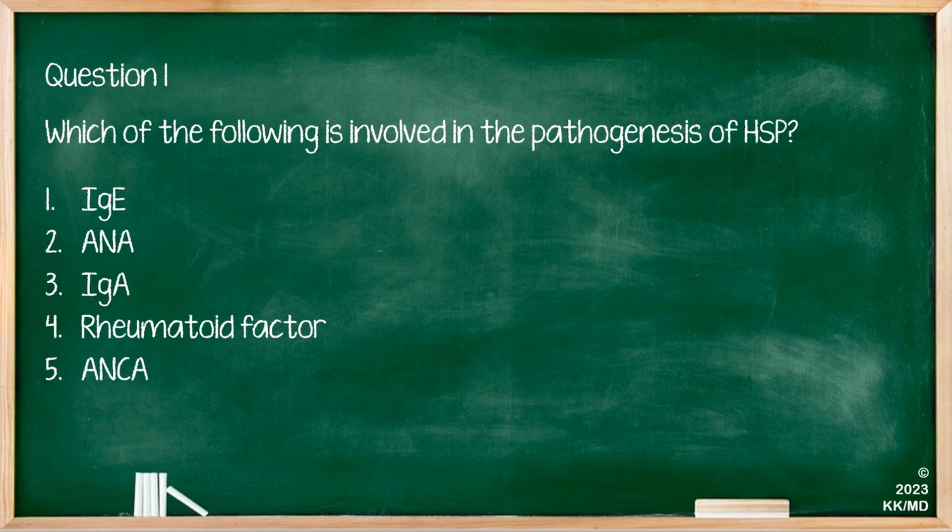Which of the following is involved in the pathogenesis of HSP? Options are IgE, ANA, IgA, rheumatoid factor, and ANCA. The exact aetiology of HSP is not fully known; however, it is a type of small vessel vasculitis most likely related to IgA — making IgA the correct answer.